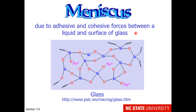A meniscus is due to adhesive and cohesive forces between a liquid and the surface of the glass. Glass is made of silicon dioxide, but there also tends to be some anion and cation characteristic to the surface of glass due to the loss of hydrogen and gain of a sodium 1+ ion. Glass can be a highly charged surface.